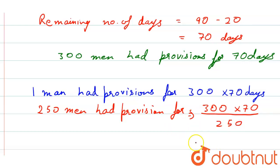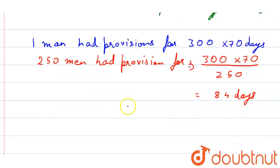250 men had provisions for 300 into 70 by 250. So, that will be, total 84 days. That will be, more men, less days.